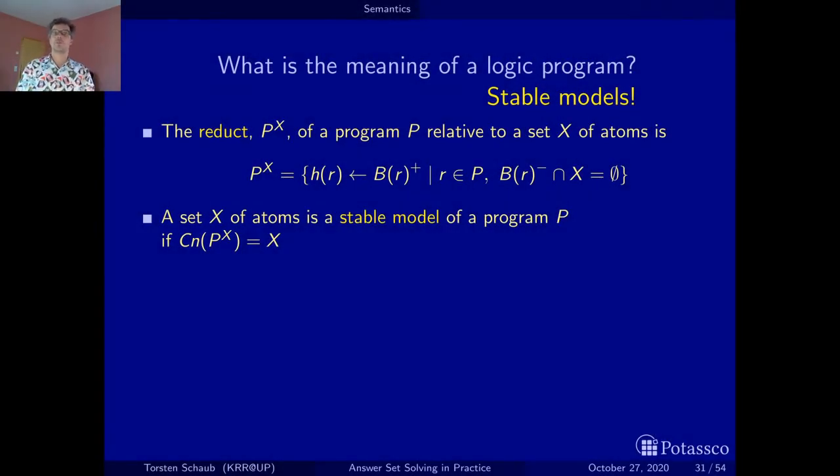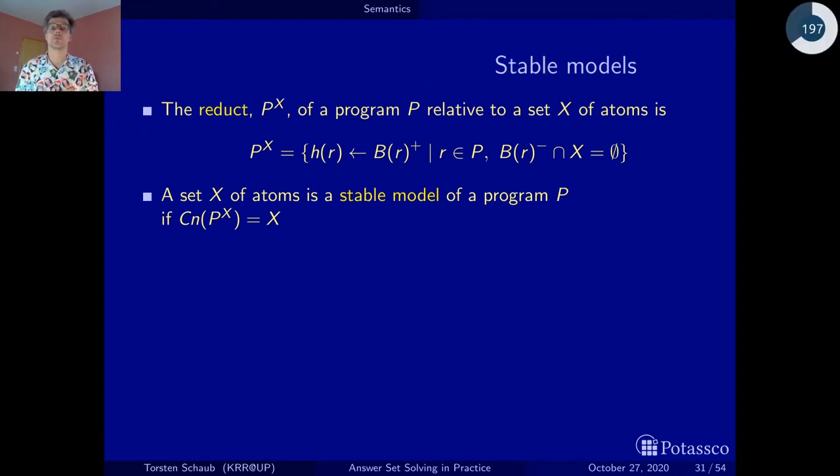Now that we answered the question on the meaning of logic programs, let us examine a bit closer the result, that is the stable models. One thing perhaps to note is I was stressing this fact a little bit. You give me a solution candidate and I can verify then whether the solution candidate is actually a solution. You give me the X and then I can verify this condition here. And actually, I can verify this in polynomial time. I can reduce P with respect to X in polynomial time. Just go through all the rules in the same way I can compute the consequences. Also, by applying one rule after the other. And at some point I went over the rules and I'm done. Polynomial.